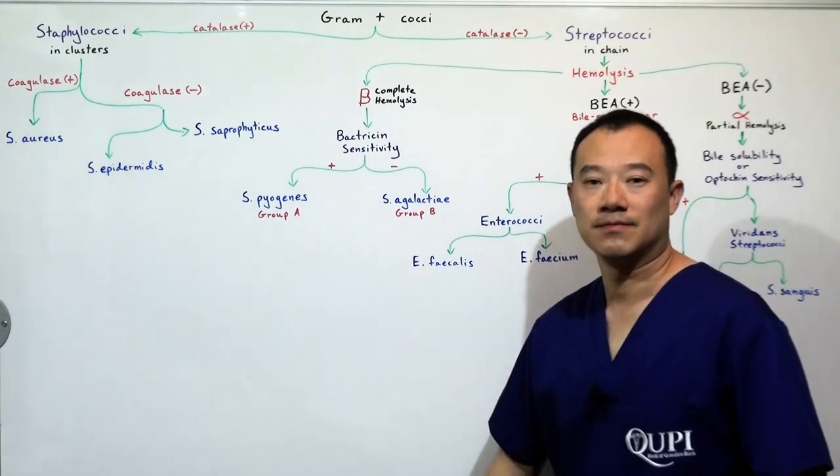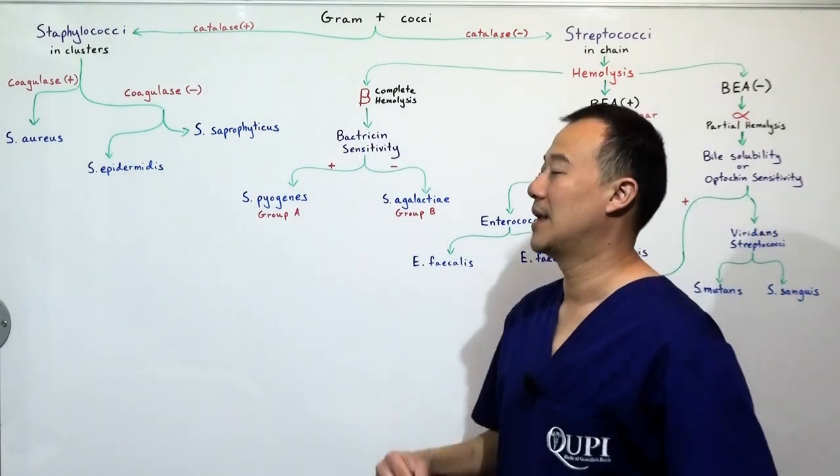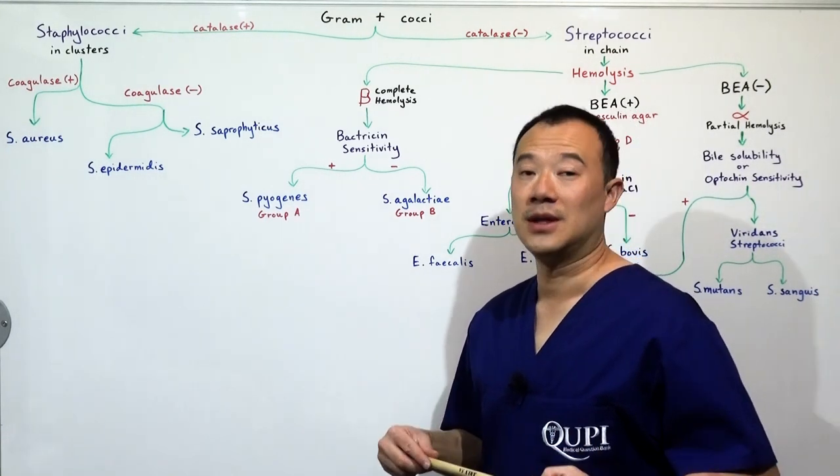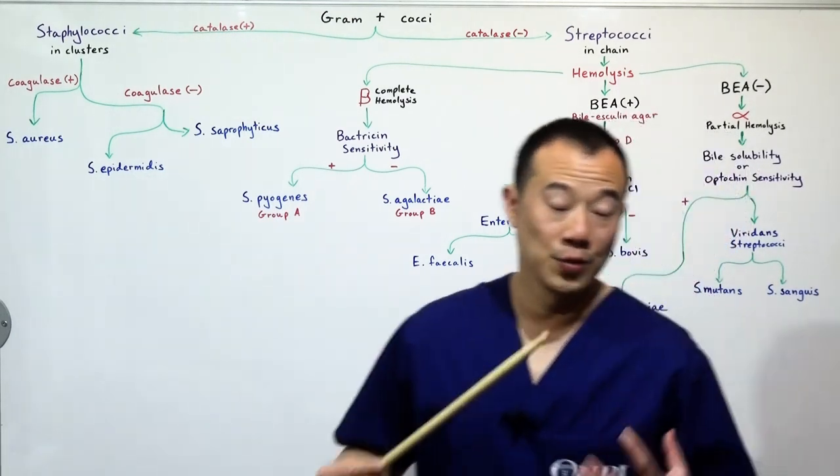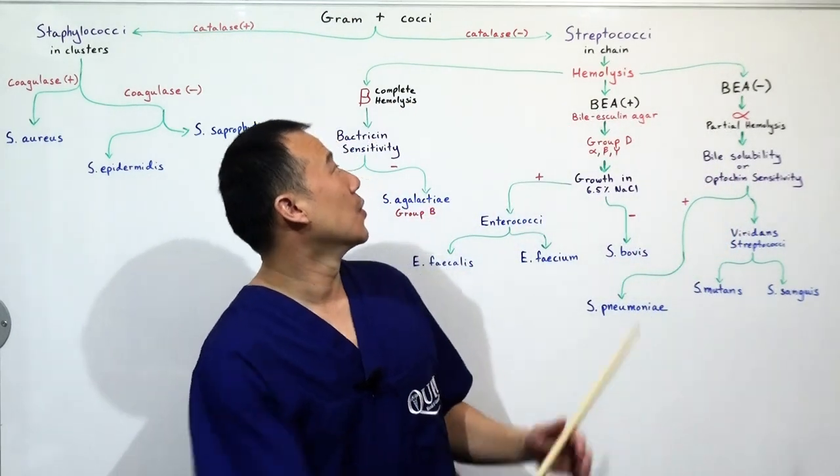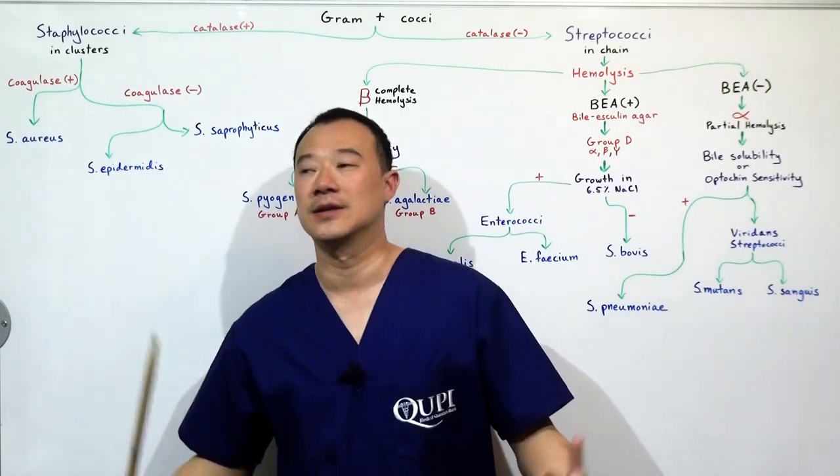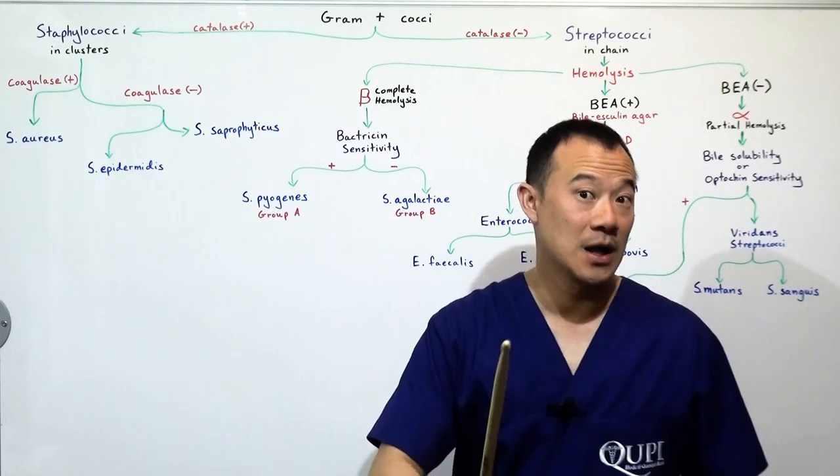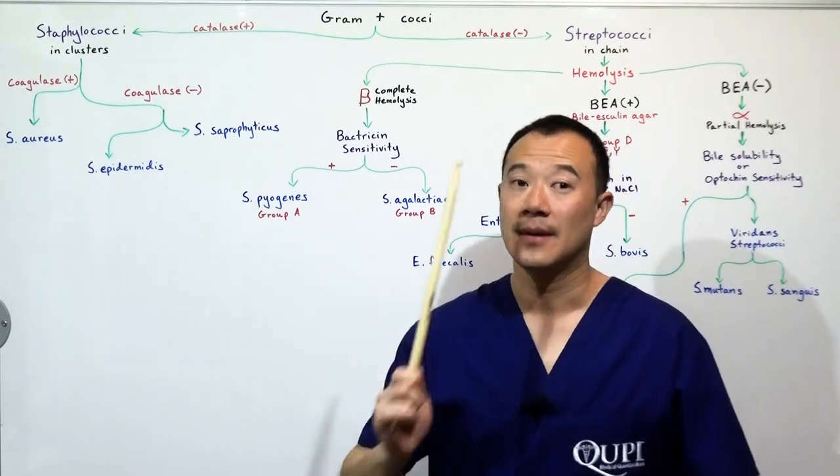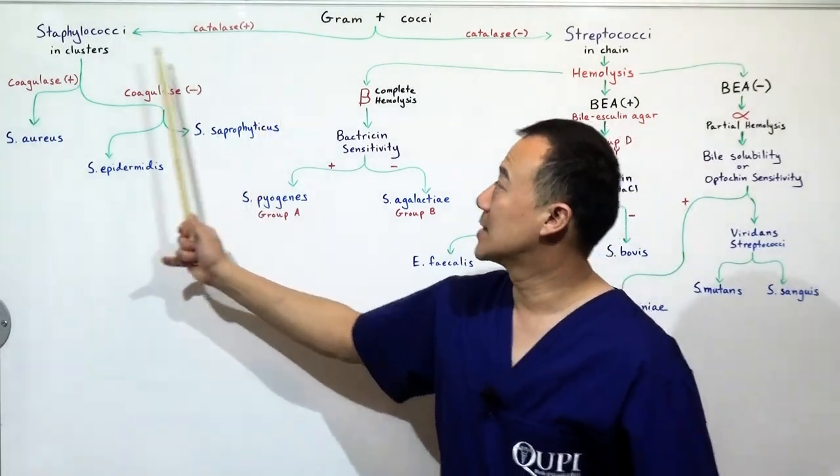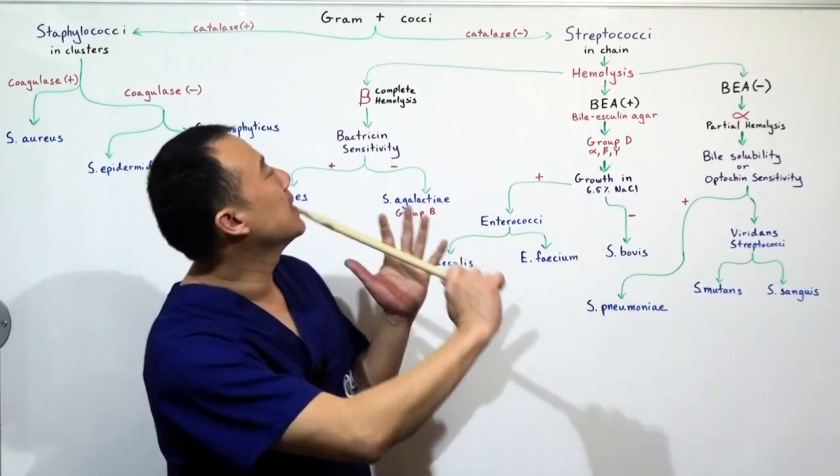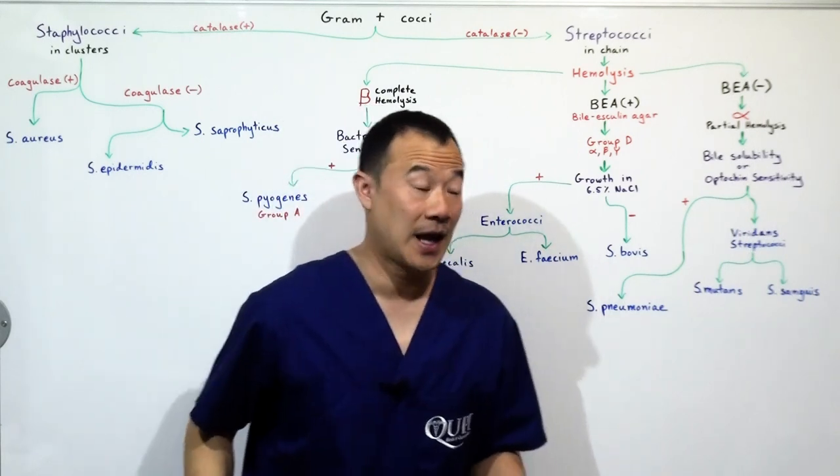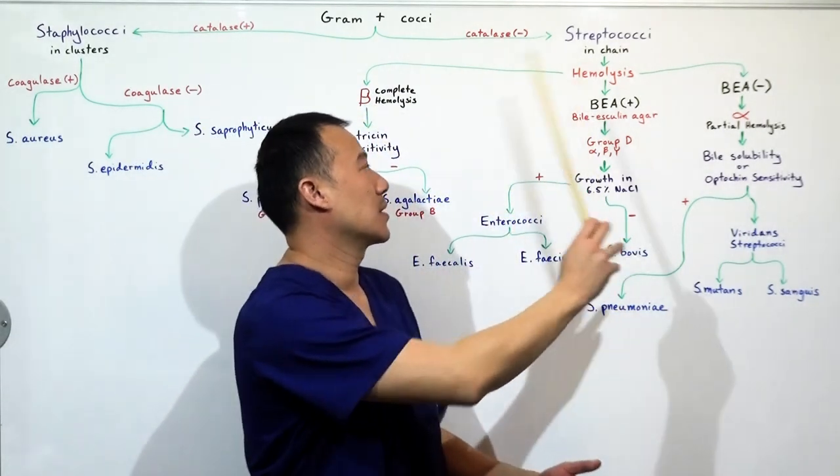You see that it's cocci, we know it's spherical shaped. Now, the clue can be either it's in clusters, grouped in clusters like a grape cluster, or they're grouped in a chain like a snake. If they're grouped in clusters or if they're catalase positive, then we know it's Staphylococci. If it is grouped in a chain or catalase negative, does not have this enzyme, then it's going to be Streptococci.